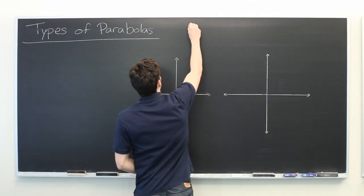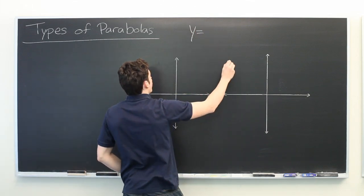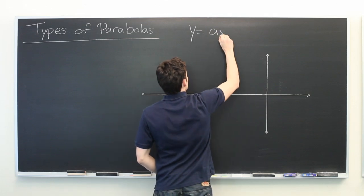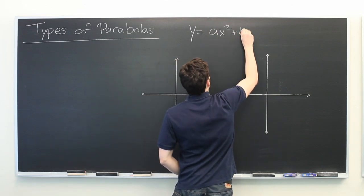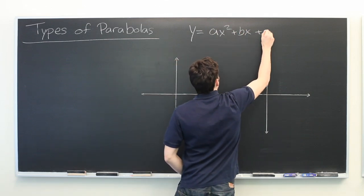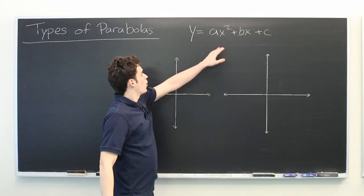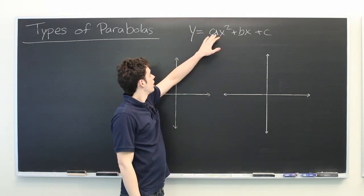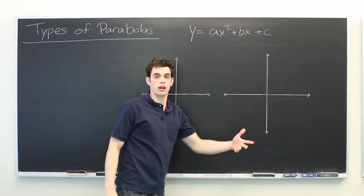A parabola is a polynomial of the form y equals ax squared plus bx plus c, where x is our independent variable, a, b, and c are constants.